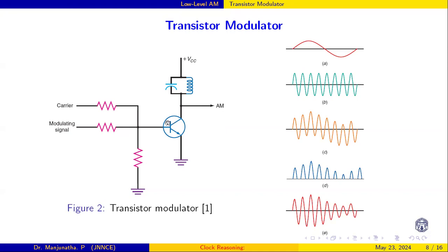This is configured in such a way that only positive half of the cycle is allowed here because this is the PN junction. Whenever the negative cycle comes, this is reverse biased, no current flows.